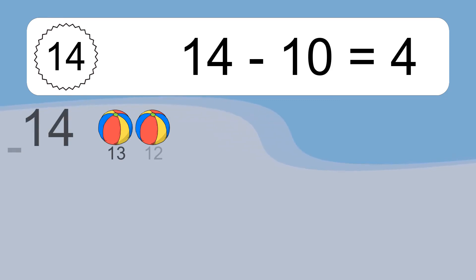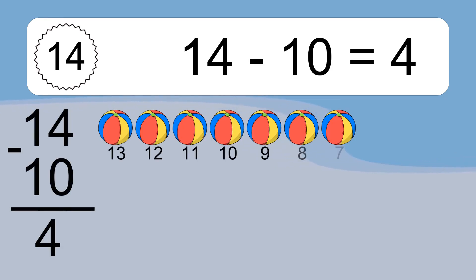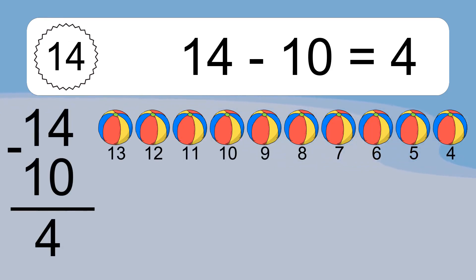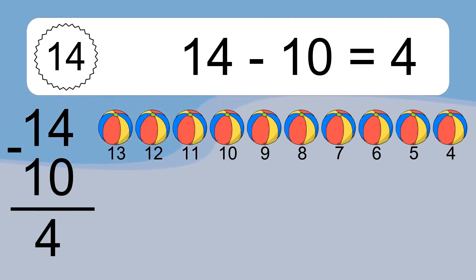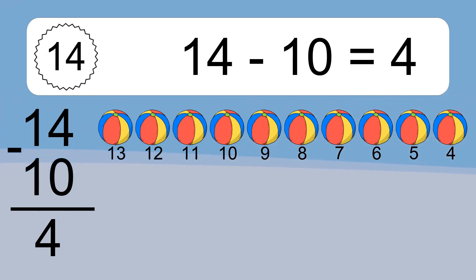14 minus 10 equals what? 14 minus 10 equals 4. Let's count it. 13, 12, 11, 10, 9, 8, 7, 6, 5, 4.